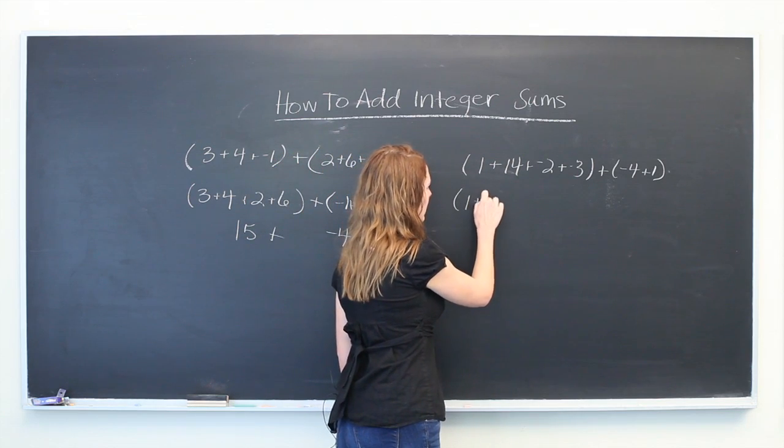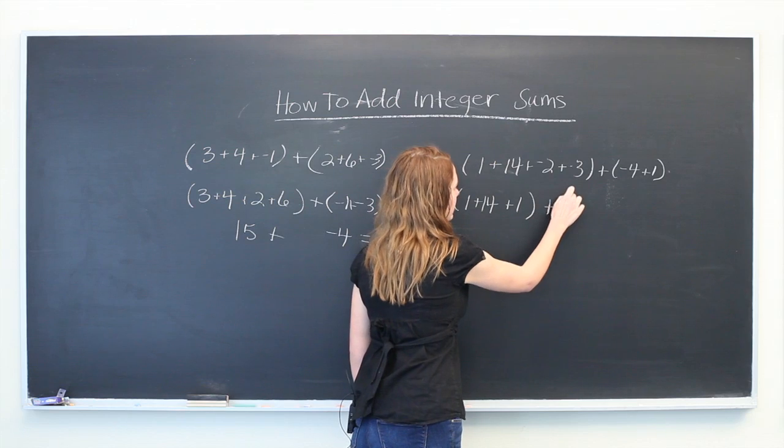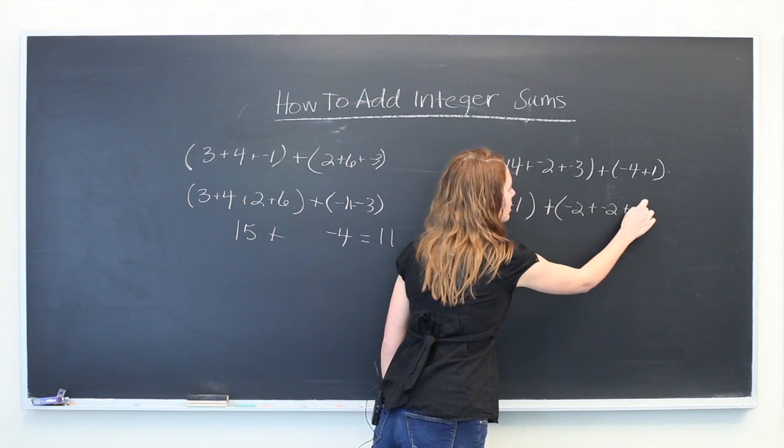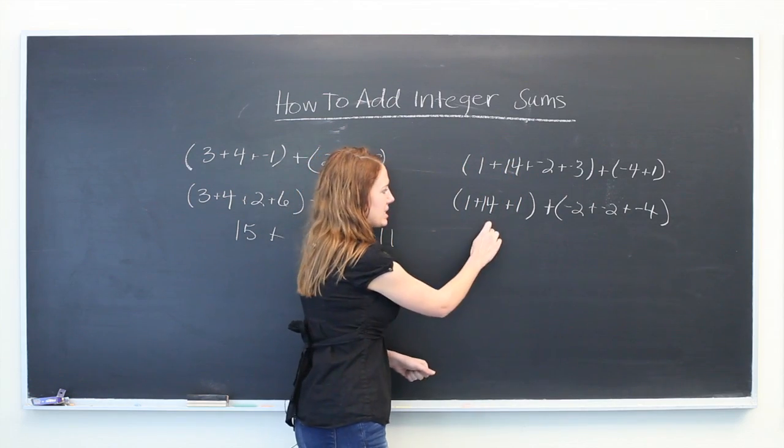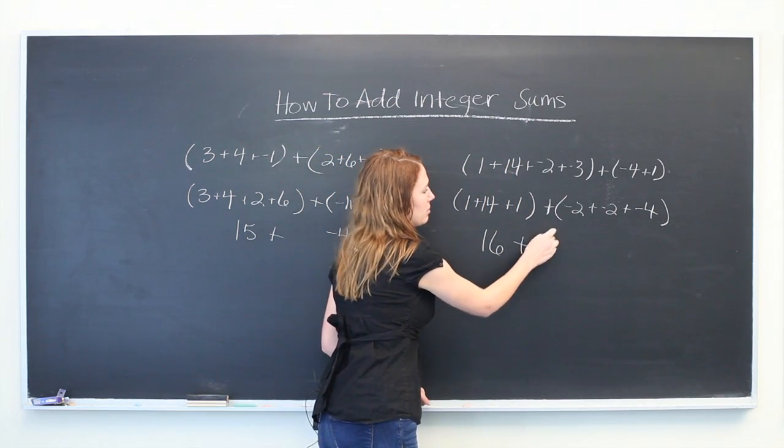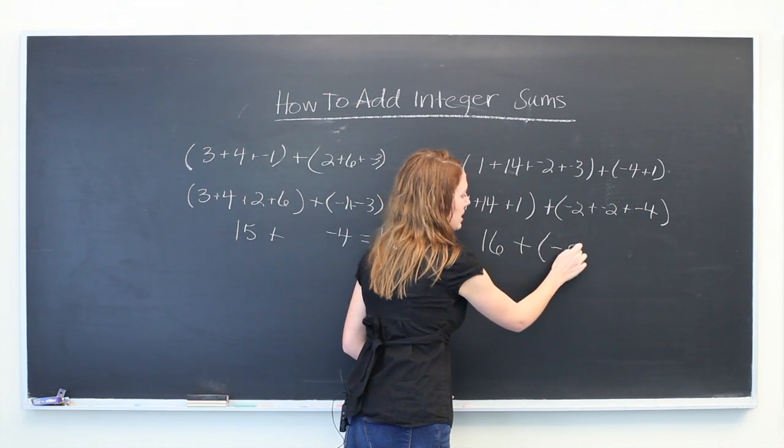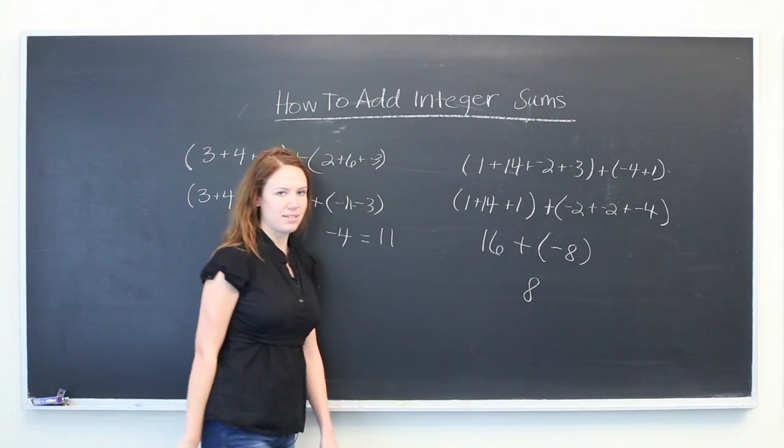So 1+14+1 plus (-2)+(-2)+(-2)+(-4). We have 16 plus (-2)+(-2)+(-2)+(-4), which is (-8), for an answer of positive 8.